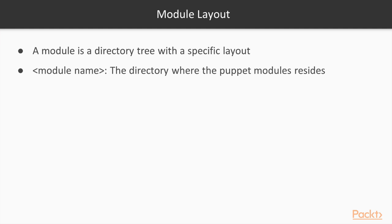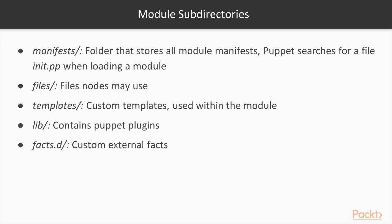So how does a Puppet module look? A module is basically just a directory tree with a specific layout. There is the module name directory where the Puppet module resides. The most important subdirectory is the Manifests folder, which stores all the Puppet module manifests. When Puppet loads a module it searches for a file init.pp in the Manifests folder — for example, inside the Apache directory, inside the Manifests subdirectory.